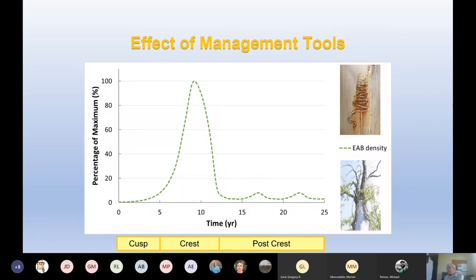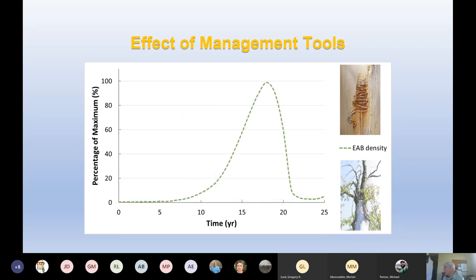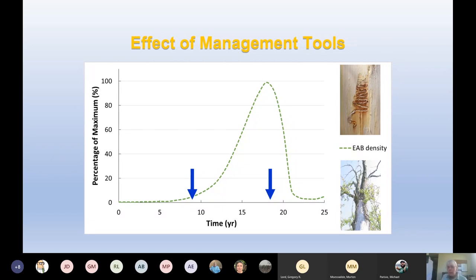The effect of management tools — whether it's pesticides, girdle trap trees, or taking out your larger ash trees — in the parlance of COVID-19, it does not flatten the curve. You will still get EAB killing your trees. But what it does do is it moves that curve further away. So instead of having your maximum mortality at around, say, eight years after you first discover emerald ash borer, all of a sudden your peak of mortality comes at maybe 18 years. You can buy yourself close to 10 years' worth of time before you have a lot of trees dying, and that can be important.